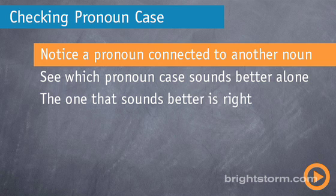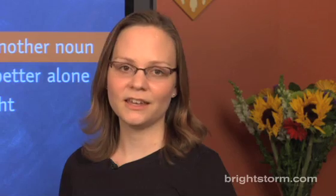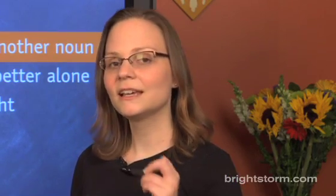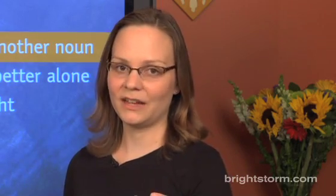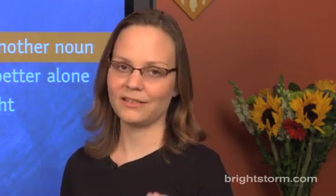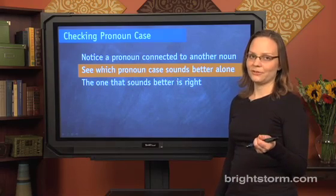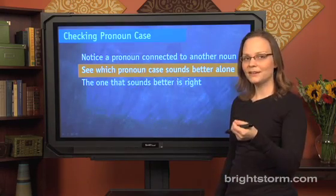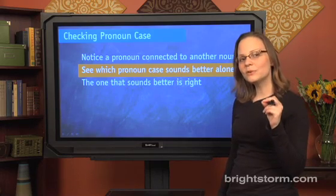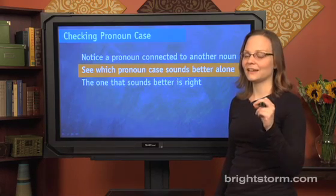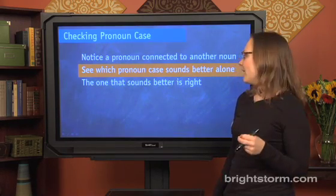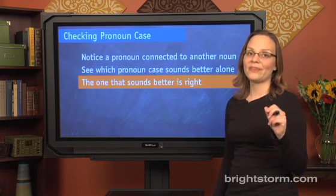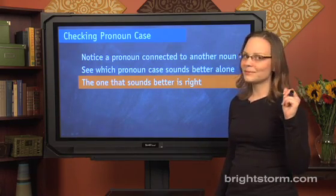Now let's go into detail on the three-step process for checking pronoun case for correctness. Step one: notice that there's a pronoun connected to another noun — a pronoun like 'he,' 'she,' 'it,' 'I' — connected to another noun, person, place, or thing, usually joined by an 'and,' or occasionally an 'or.' Step two: take the two pronoun cases, like 'I' and 'me' or 'he' and 'him,' and see which one sounds better in the sentence in isolation. Step three: based on that, the one that sounds better is the correct one. Let's look at some examples.